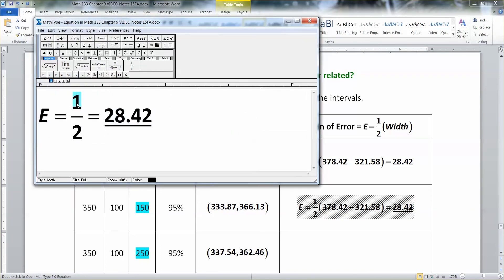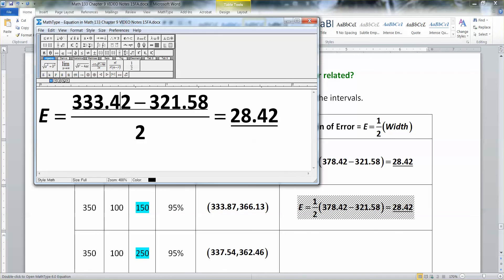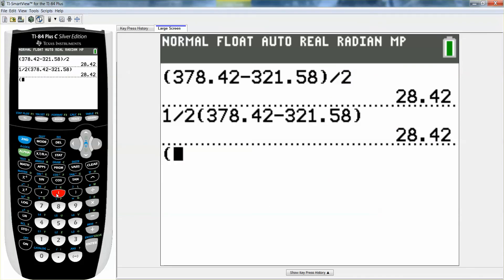And for the next one I'm going to write it differently. I'm going to do the other writing just so you can see both of them when you go to your notes. So this one's 333.87 minus 366.13 and cut it in half. And that's going to be 16.13 if I'm not mistaken. So let me prove it to you.